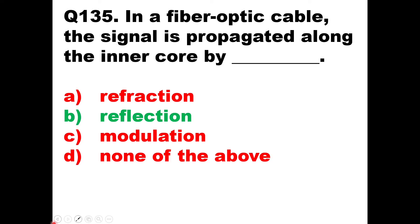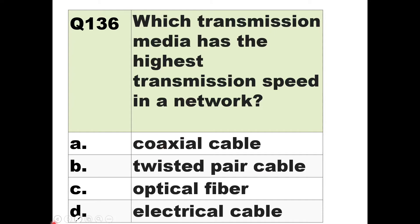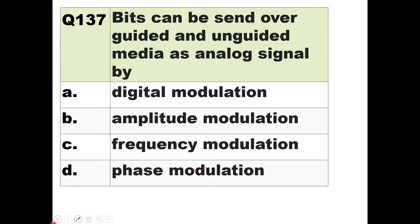Question 136: Which transmission medium has the highest transmission speed in a network? The options are coaxial cable, twisted pair, optical fiber, and electric cable. Since light travels faster than electricity, optical fiber has the highest transmission speed and is the correct answer.